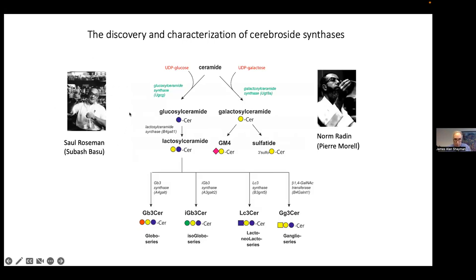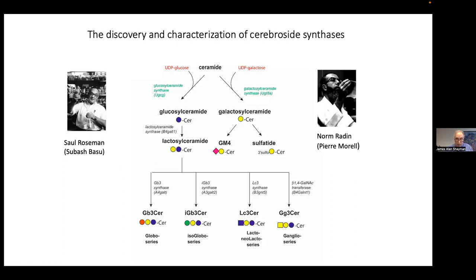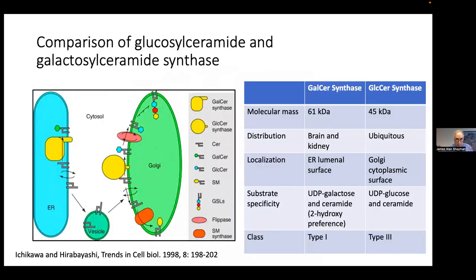This is very much a Michigan story and it began in the 1960s when two renowned biochemists, Saul Roseman and Norm Radin, described the primary pathways for simple glycosphingolipid synthesis using UDP sugars — UDP glucose in the form of glucosylceramide synthase, and UDP galactose for galactosylceramide synthase. This was very much seminal work because it described the first step in the synthesis of what are now recognized as over 300 — a million — glycosphingolipids that have occupied the efforts of scores of labs over the years.